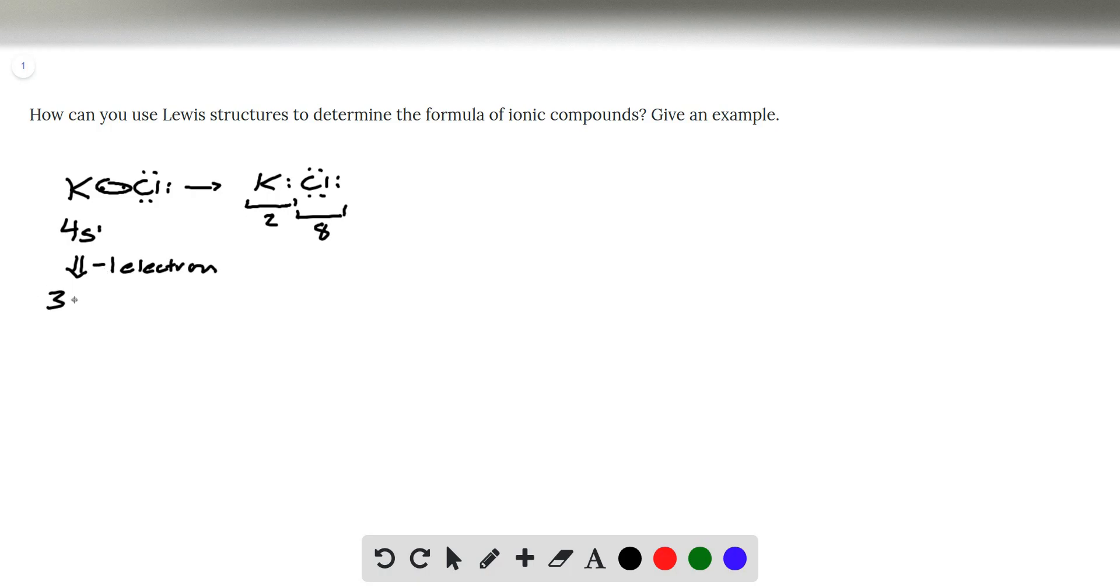So if we got rid of that 4s electron, the 3 quantum level now becomes our outermost level, our valence level of electrons, and that 3 level is totally filled. So it's 3s2, 3p6. So by giving up an electron, potassium is actually able to get to a full octet. It's just one energy level lower.